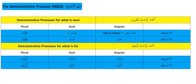If I was pointing to two men I would say 'hadhani rajulani' — these are two men. I don't say 'hadha,' I say 'hadhani' because in Arabic we have singular, dual, and plural.